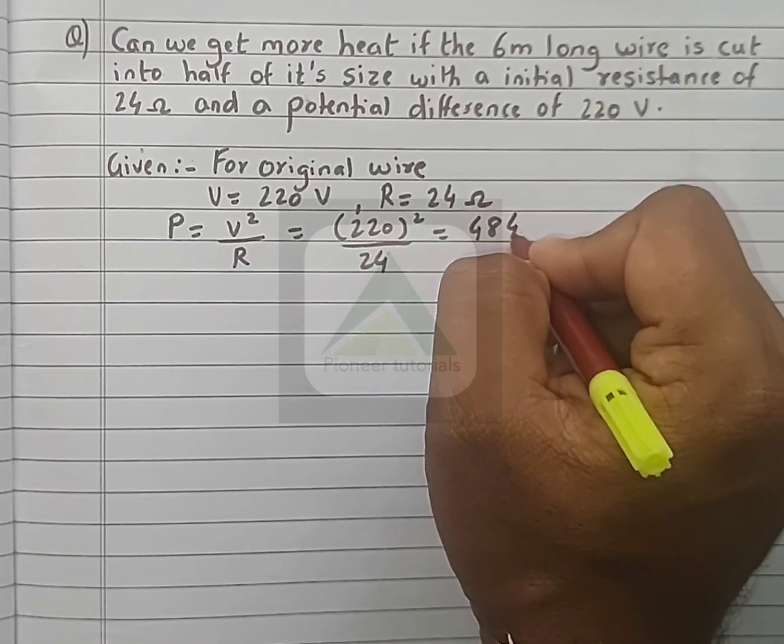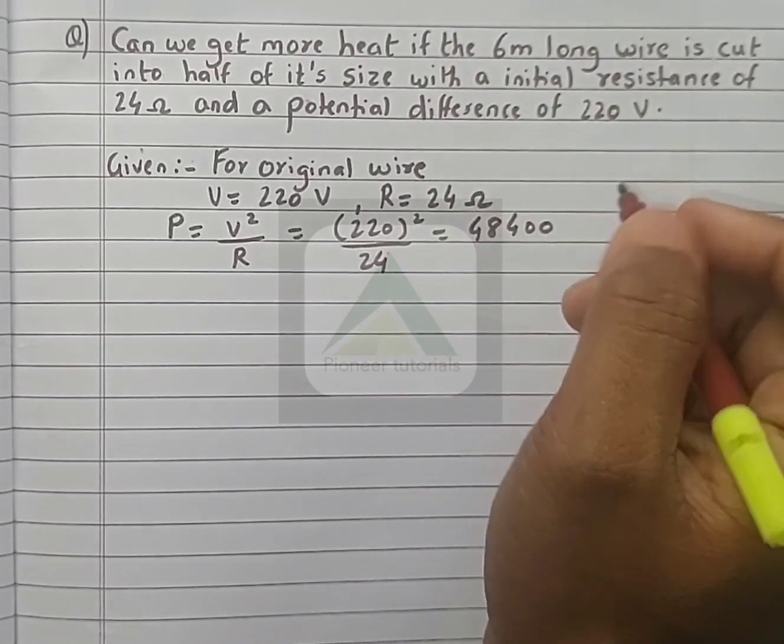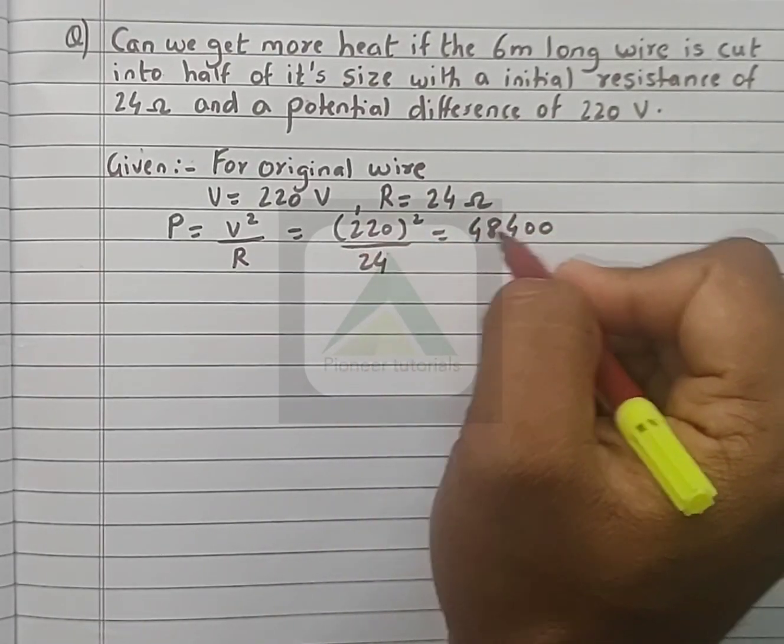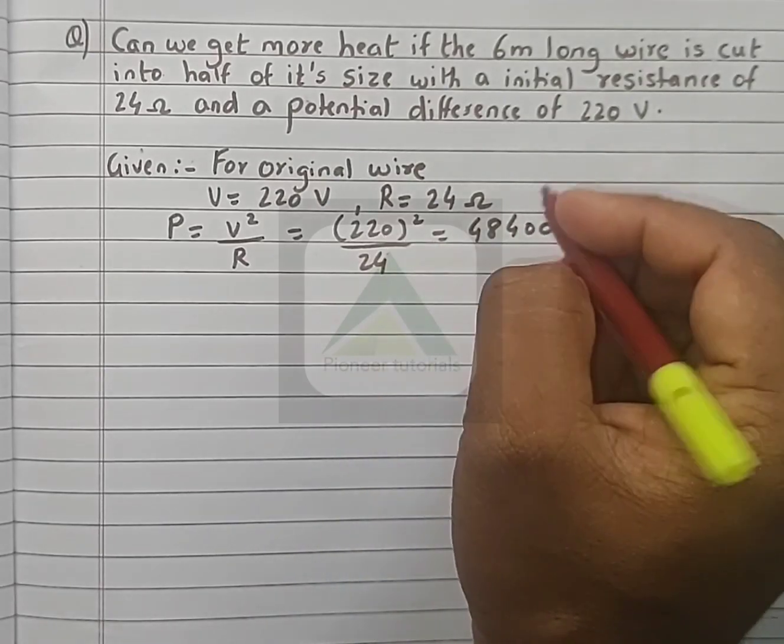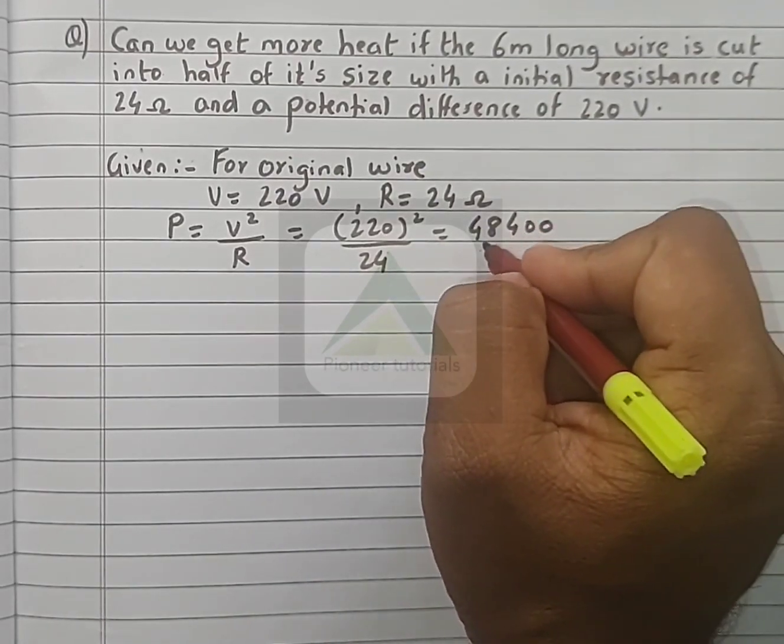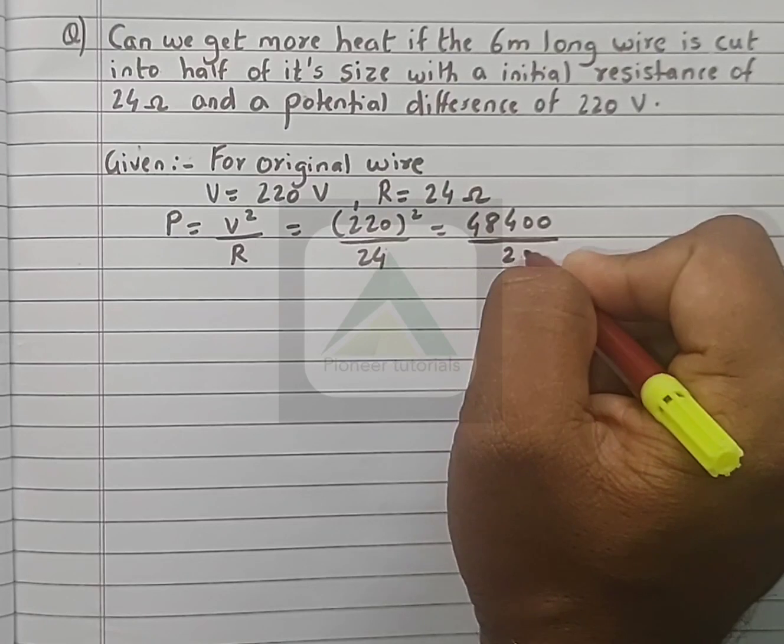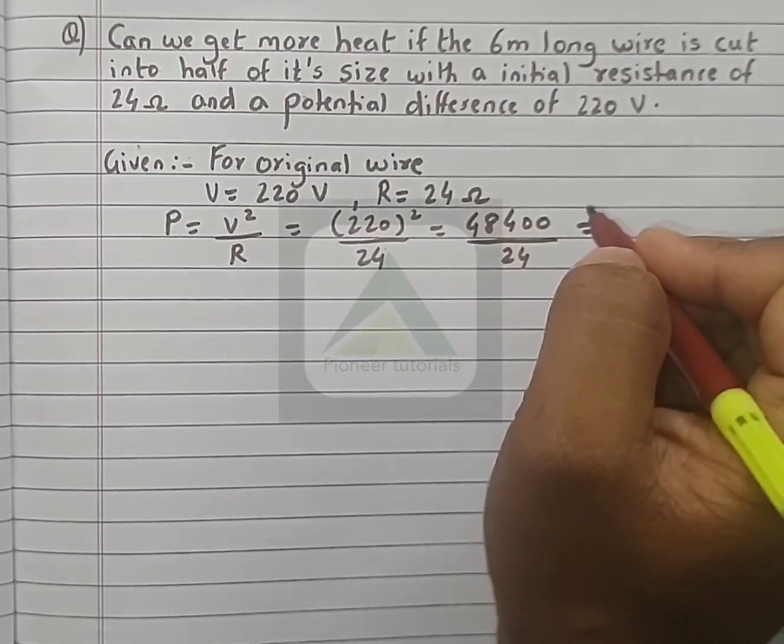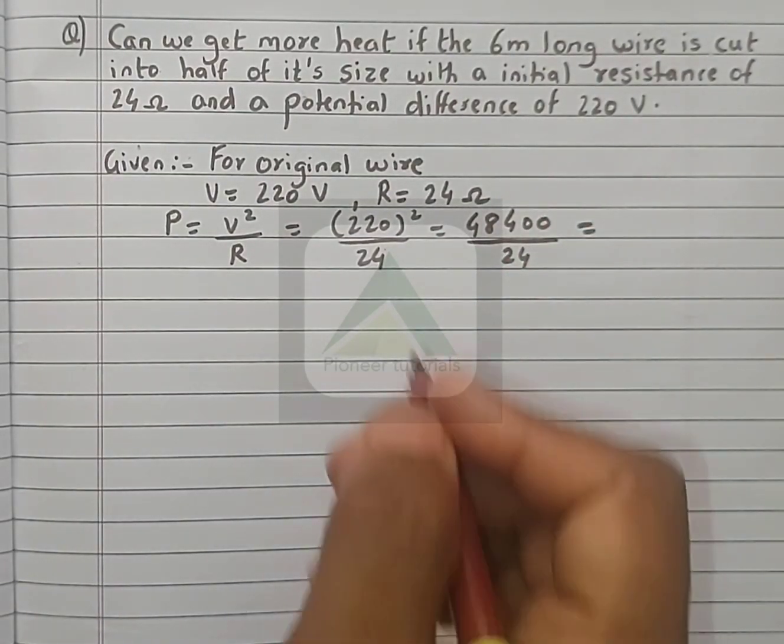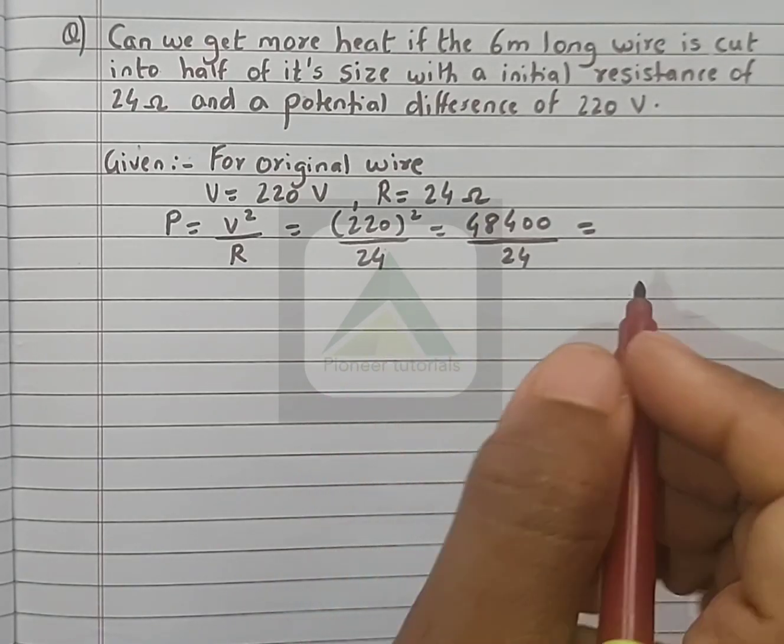220 squared is 484, add two zeros to get 48,400 upon 24. When you divide it we get 2016.66 watts.